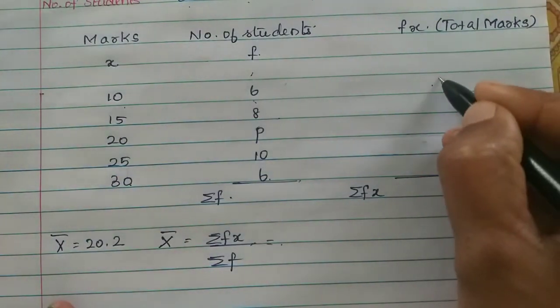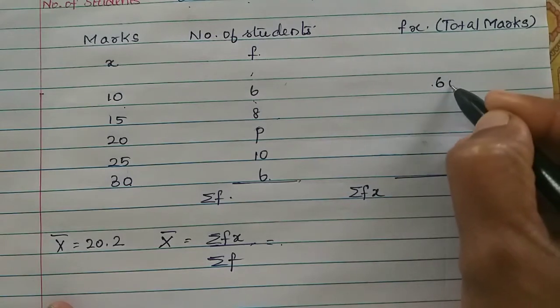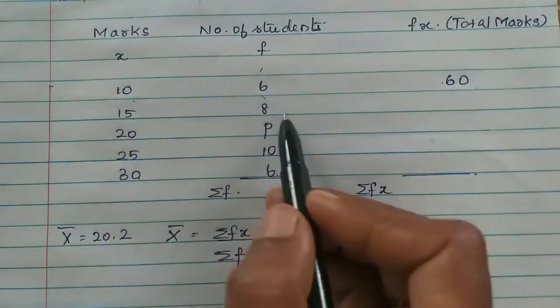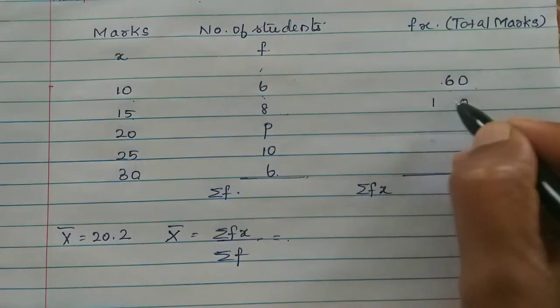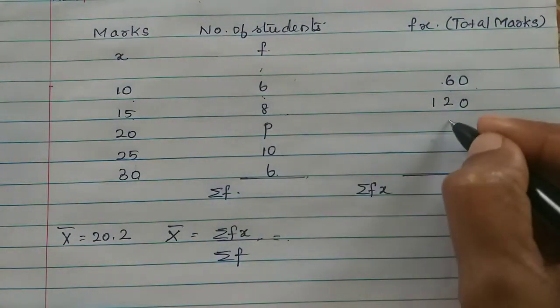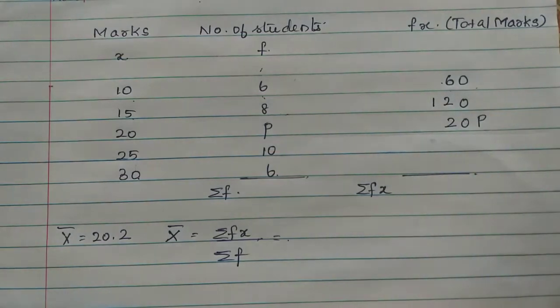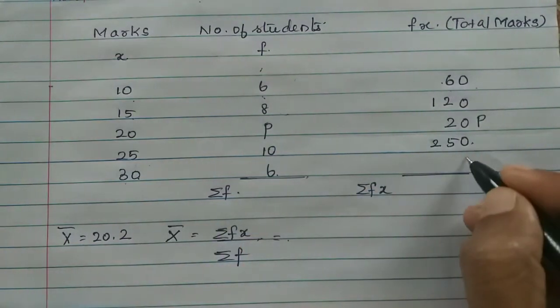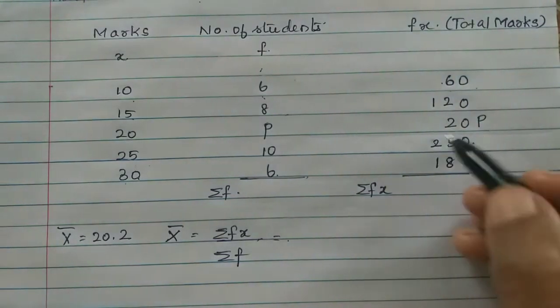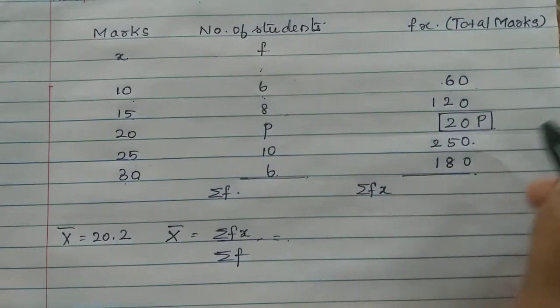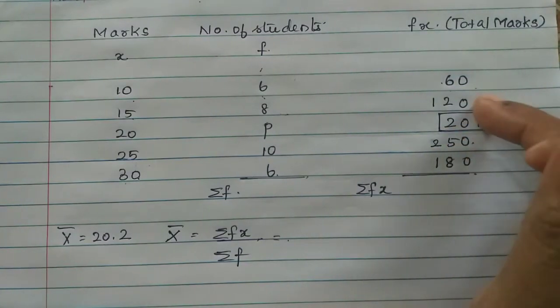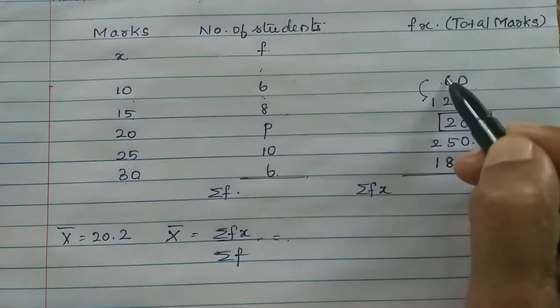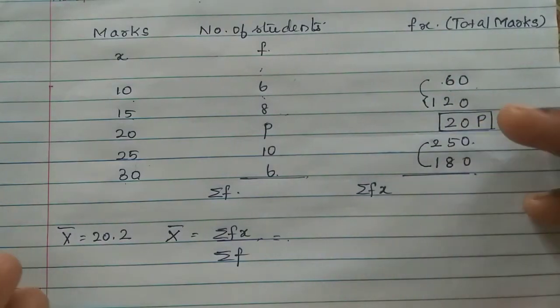Now let's calculate: 10 into 6 equals 60 marks. If 6 students get 10 marks, that's 60 total. Then 15 into 8: 8, 5, 0, 40 then 1, so 120. Then 20 into P is 20P. Then 25 into 10 is 250. Then 30 into 6 is 180.